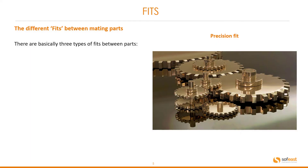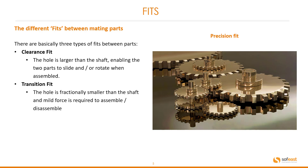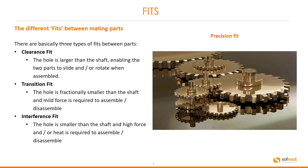Let's have a look at the different fits between mating parts. There are typically three types of fit between parts. Clearance fit: the hole is larger than the shaft, enabling the two parts to slide and/or rotate when assembled. Transition fit: the hole is fractionally smaller than the shaft and mild force is required to assemble or disassemble. Interference fit: the hole is smaller than the shaft and a high force and/or heat is required to assemble or disassemble.